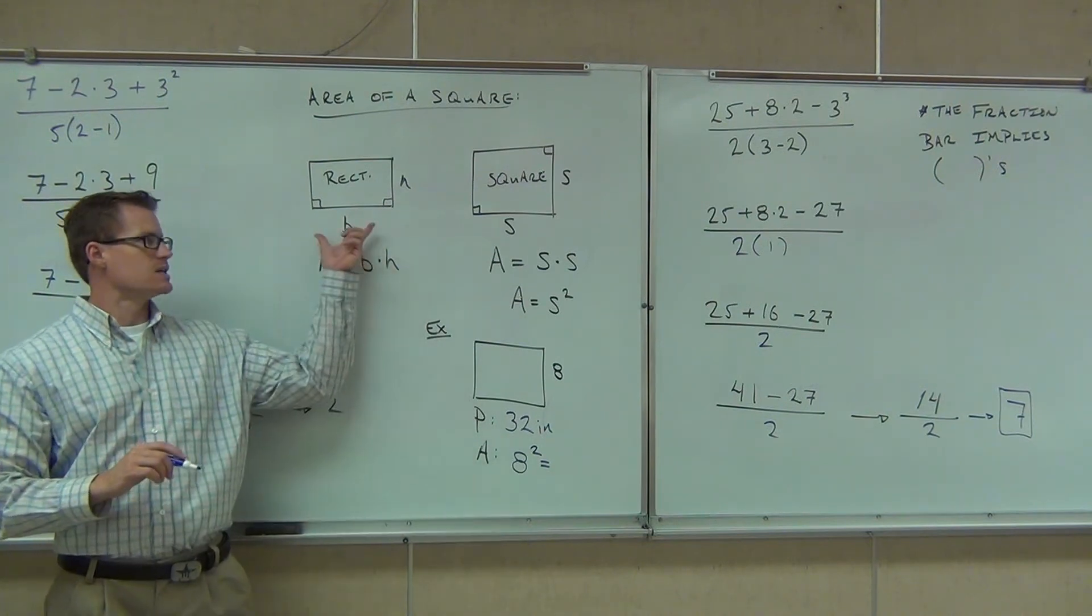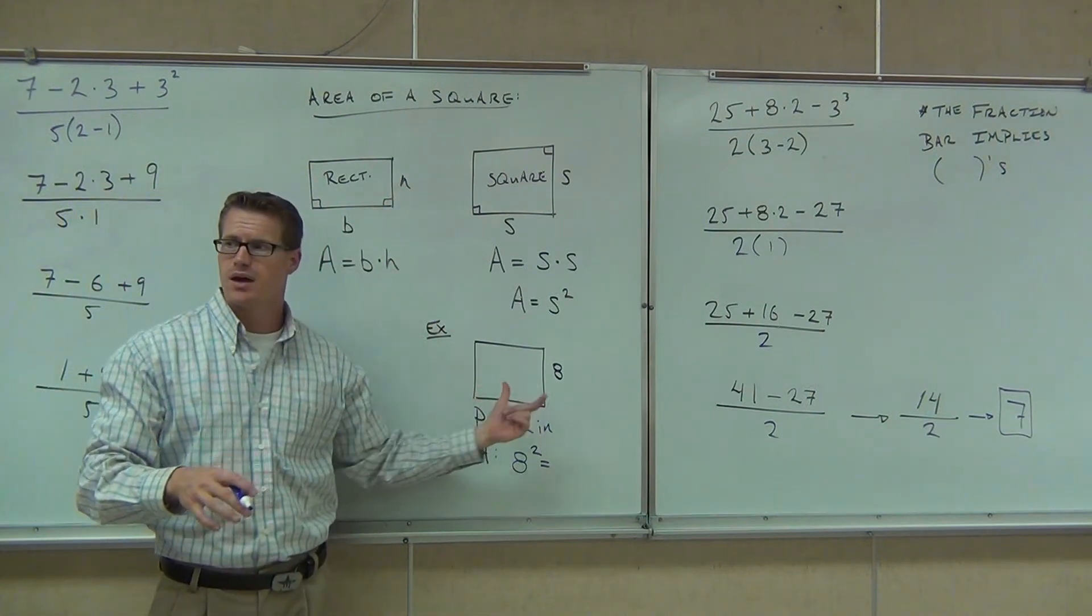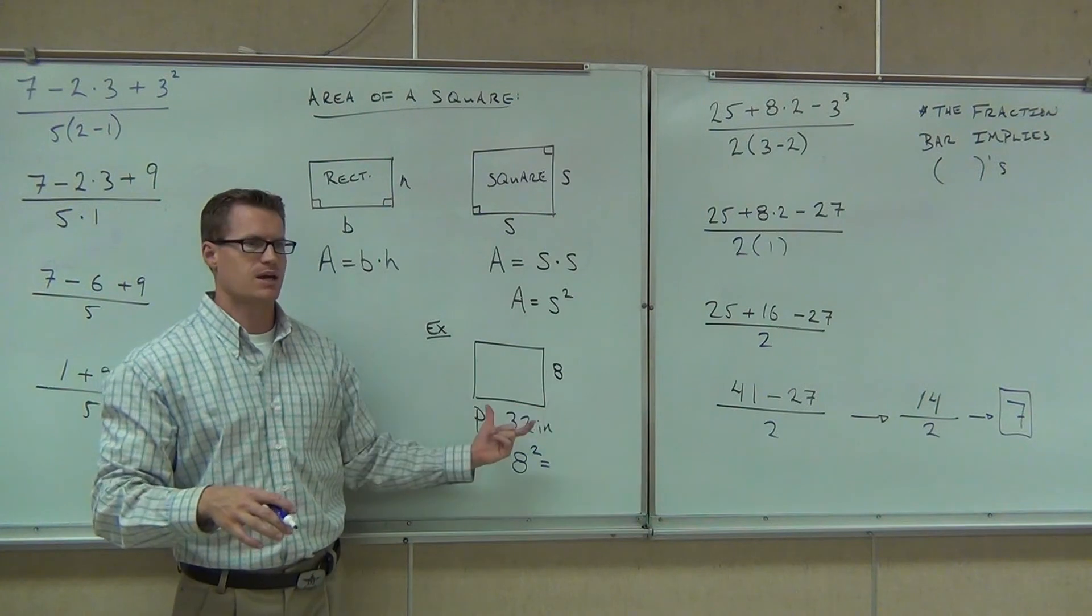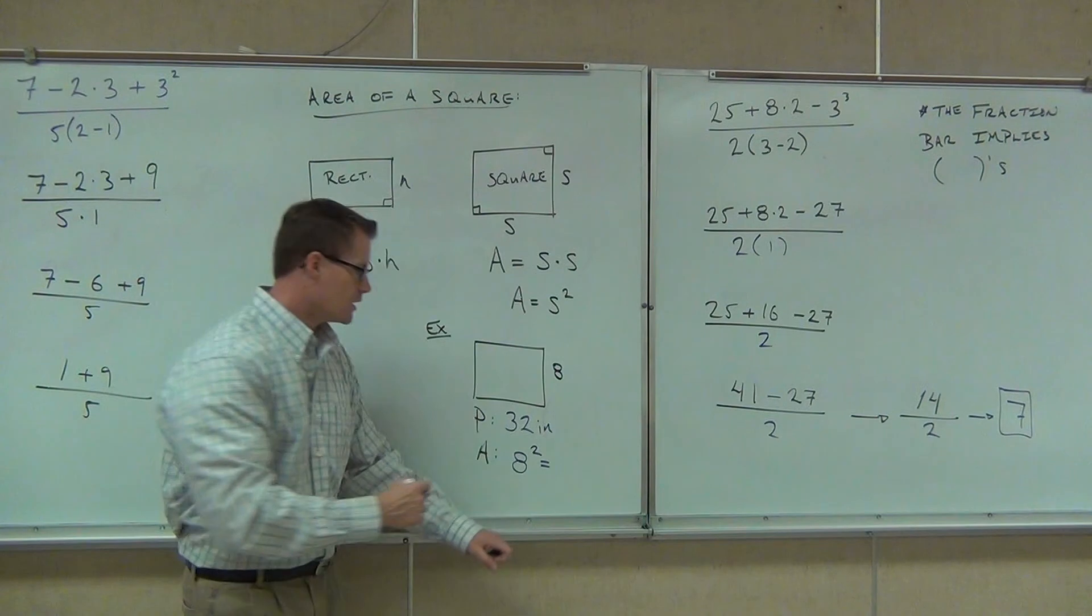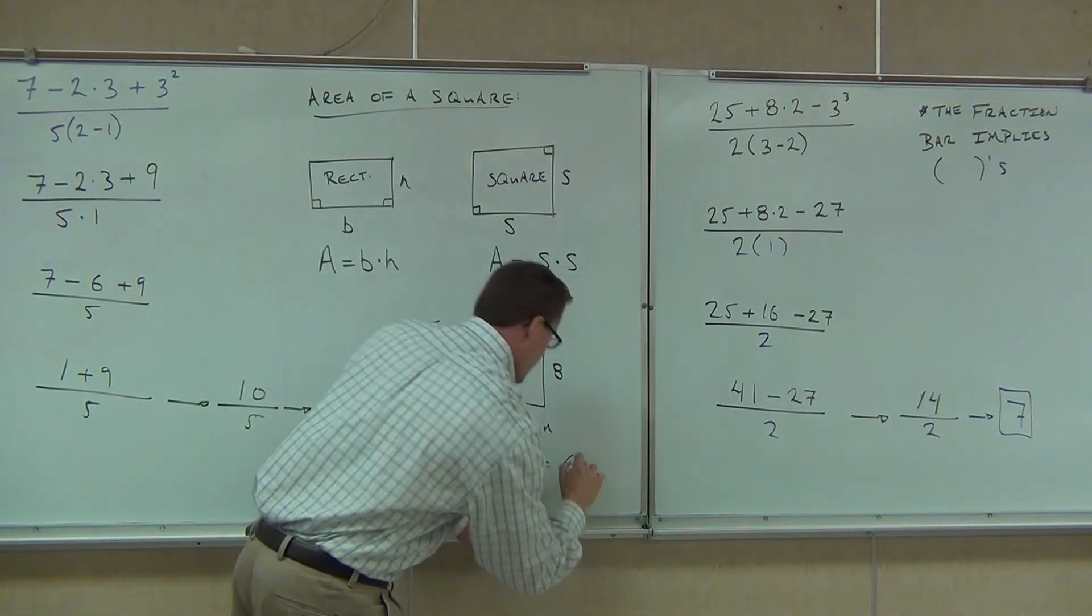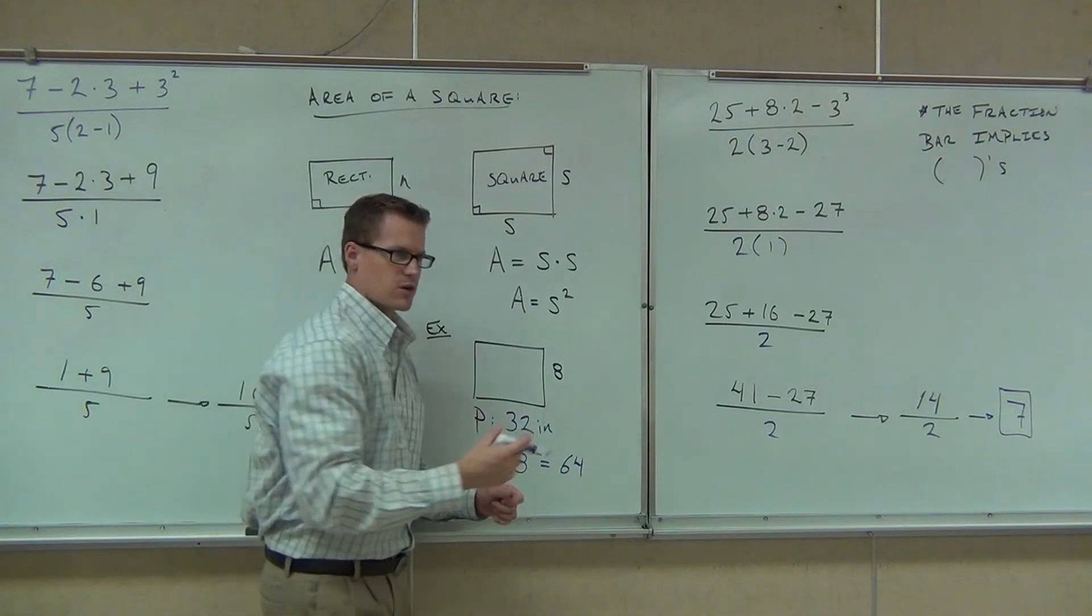On the area of a rectangle, we did base times height. Area of a square, we're doing the same thing. We're doing base times height. It's just you happen to have the same base and the same height. So we're multiplying that number times itself twice, or in other words, we're squaring. So we're going to get sixty-four. And in this case, you all should have down there square inches, or whatever units you used.